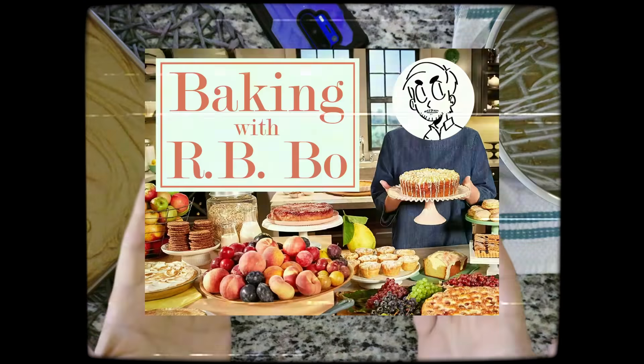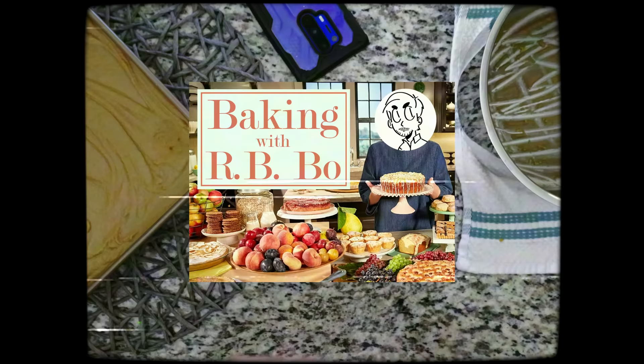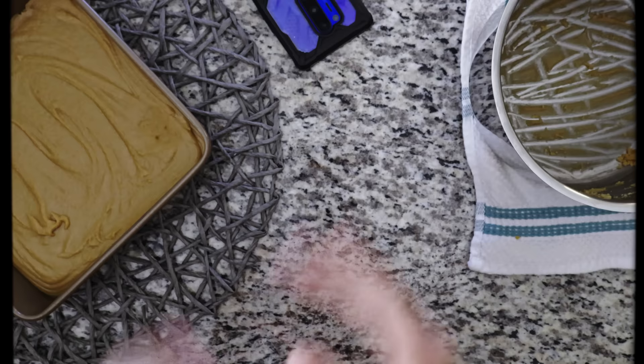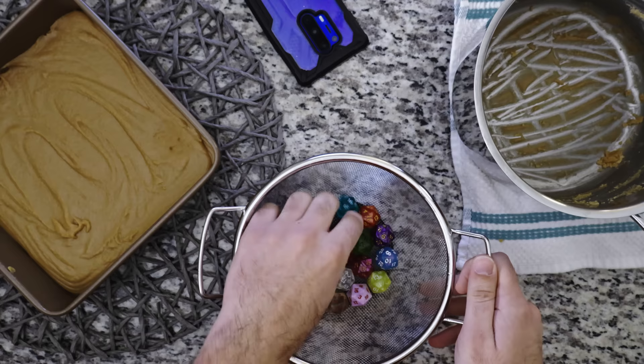Welcome back to Baking with RB Bo. Now, during the commercial break, we just finished pouring our fudge dice mixture into the baking pan to cool. Now, for those of you who prefer a bit less player agency in your games, or if you're making these treats for either a four-year-old child or a 40-year-old man-child who still hasn't grasped the concept that there's consequences to his actions when you're playing a game system that involves rolling dice, feel free to sprinkle on a few more math rocks with whatever number you prefer facing up.